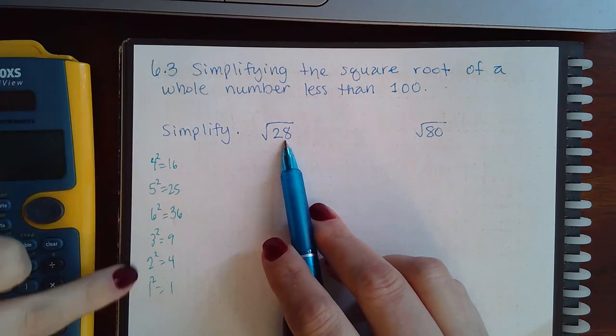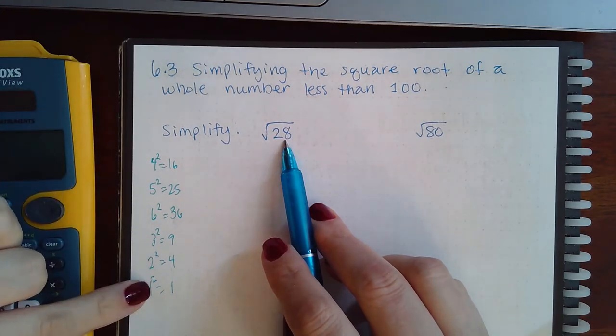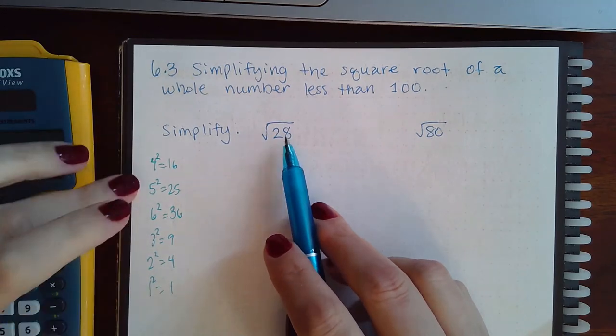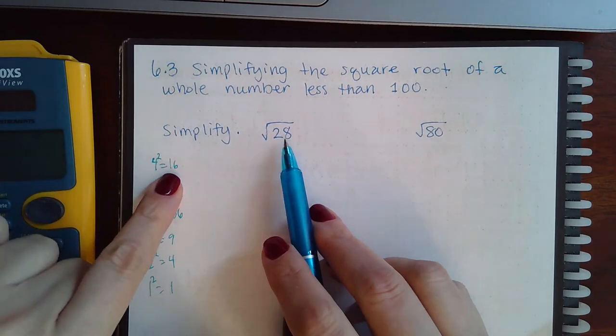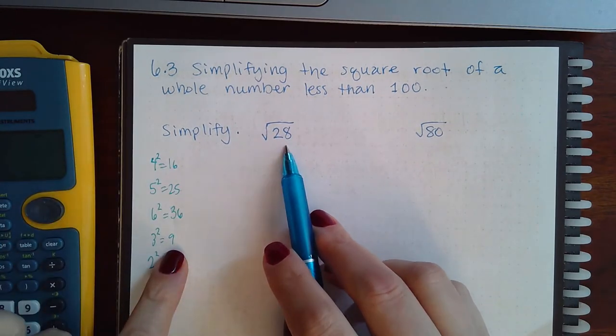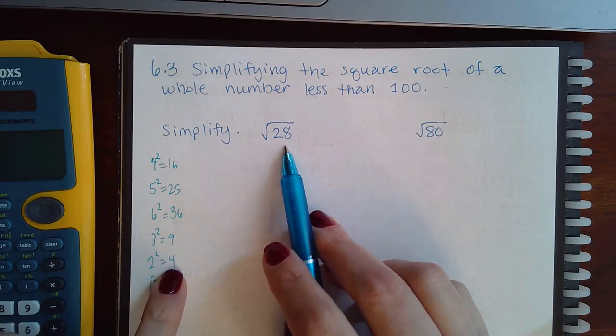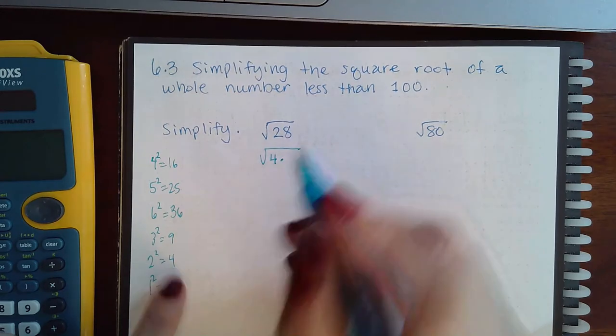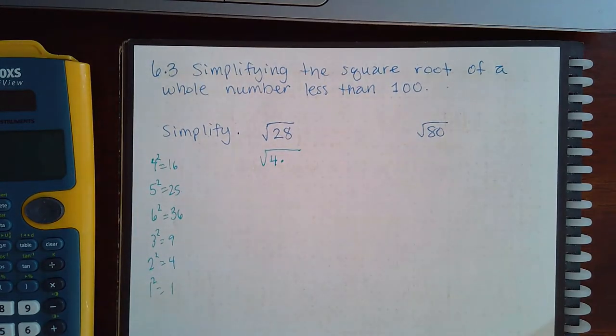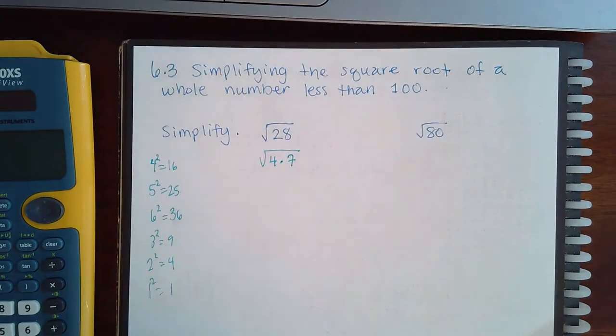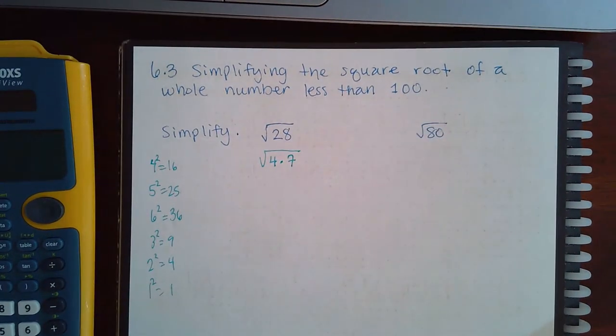Between these values, the only one that will divide evenly into 28 is 4. You can write 28 as the product of 4 and another number, which would be 7. 4 times 7 is 28, and because 4 and 7 are both real numbers, we can apply that property and separate the square root.